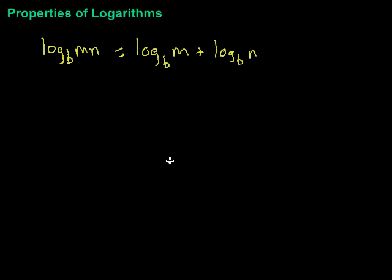Now this property can be used in either direction. So many times we'll have two logs that are being added together. We can take the product of our m and n pieces and simplify it to get that single log. One thing that's key is that we have the same base on both logarithms. If we do not, we cannot make that combination.